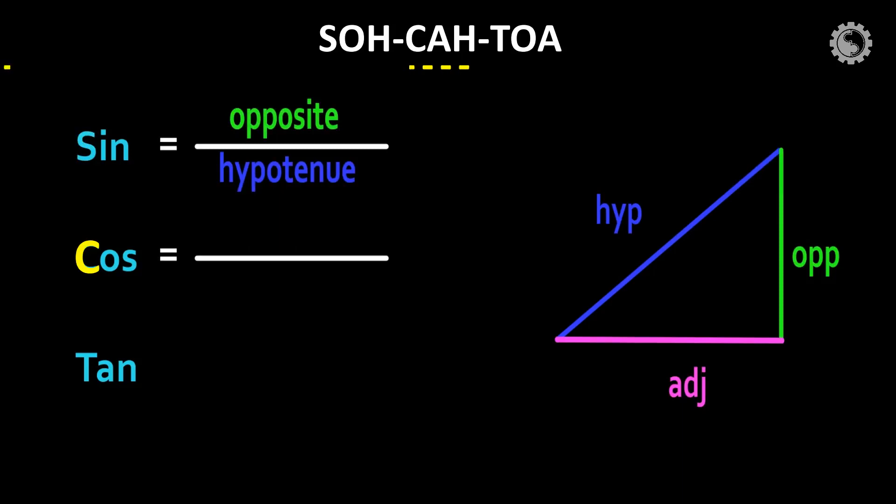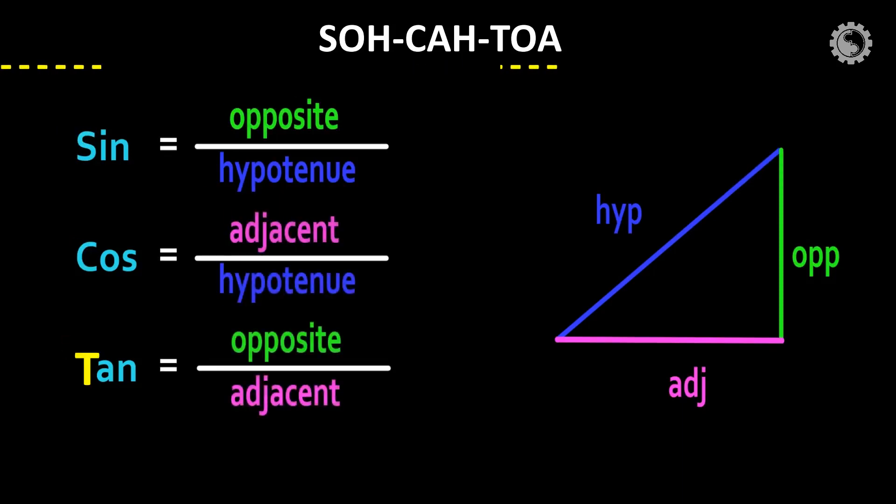CAH shows cos equals adjacent divided by hypotenuse. TOA shows tan equals opposite divided by adjacent. This word SOH-CAH-TOA is used to easily memorize the functions.